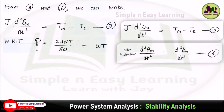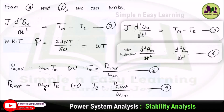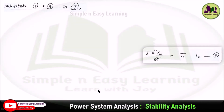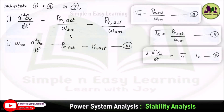We know that power P = 2πNT/60, and 2πN/60 = ω, so P = ω·T. Therefore, actual mechanical power PM_act = ωsm · Tm, giving Tm = PM_act / ωsm (Equation 8). Similarly, PE_act = ωsm · Te, giving Te = PE_act / ωsm (Equation 9). Substituting Equations 8 and 9 into Equation 7 (which uses Equation 6 substituted into Equation 3), and taking ωsm to the left side, yields: J·ωsm · (d²δm/dt²) = PM_act − PE_act (Equation 10).